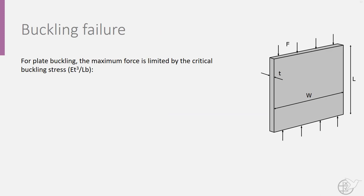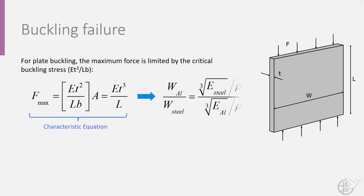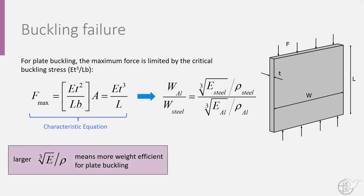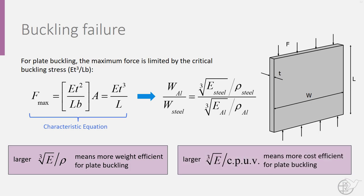Conversely, if we consider the case of buckling, which has the following characteristic equation, the selection criteria would reduce to a ratio of the cube root of material stiffness divided by material density, or divided by material cost per unit volume depending on if weight or cost were the driving design constraints.